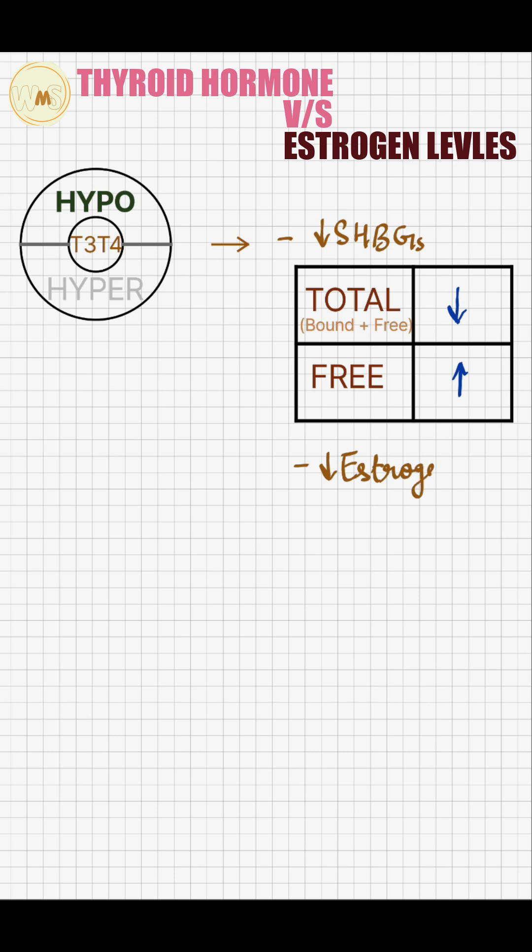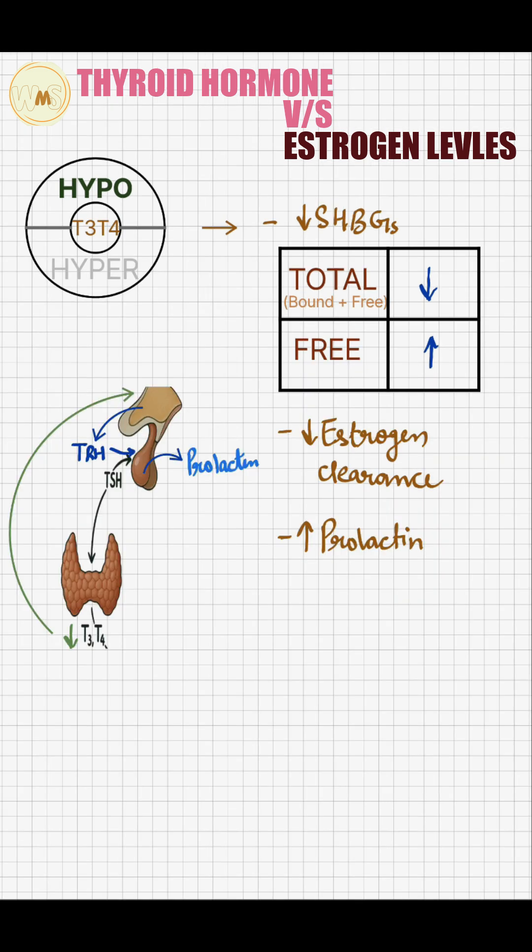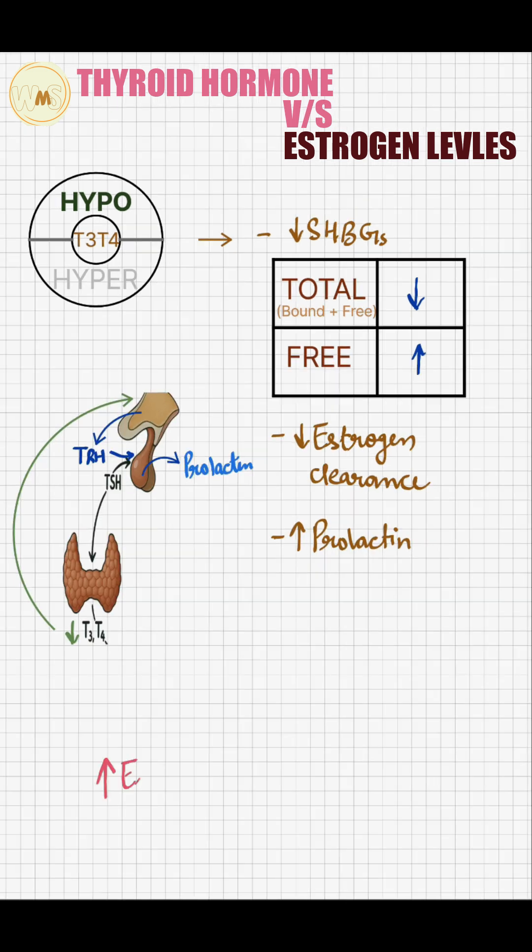Decreased estrogen clearance also increases estrogen levels. Increased prolactin levels cause decreased GnRH, LH, and FSH levels.